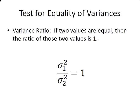Importantly, the way this test is constructed, it uses a variance ratio. If two values are equal, then the ratio of those two values is 1. So if two variances are equal, the ratio of those variances is 1.